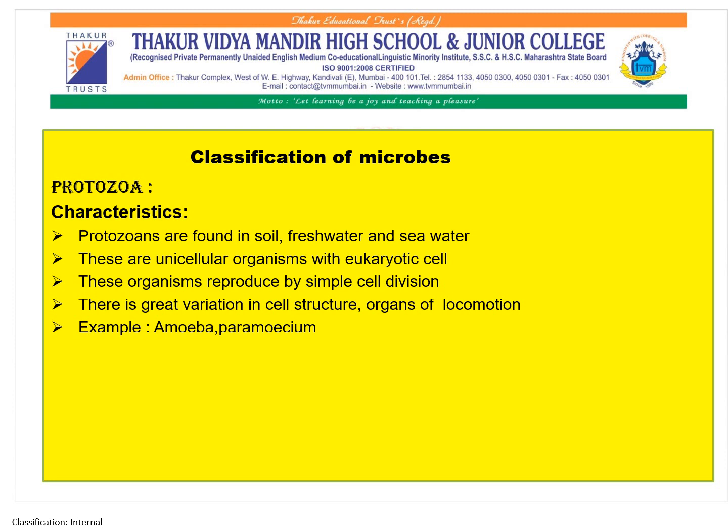Protozoans are found in soil, fresh water, and seawater. These are unicellular organisms with a eukaryotic cell. They reproduce by simple cell division. There is great variation in cell structure and organs of locomotion. Examples are Amoeba and Paramoecium.